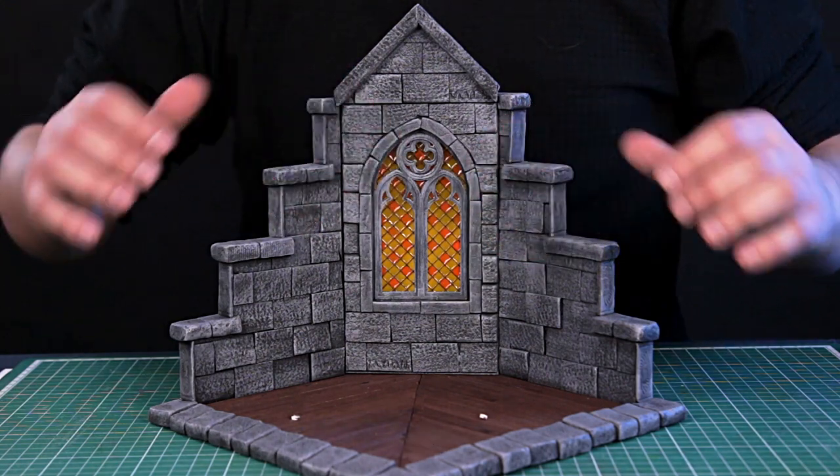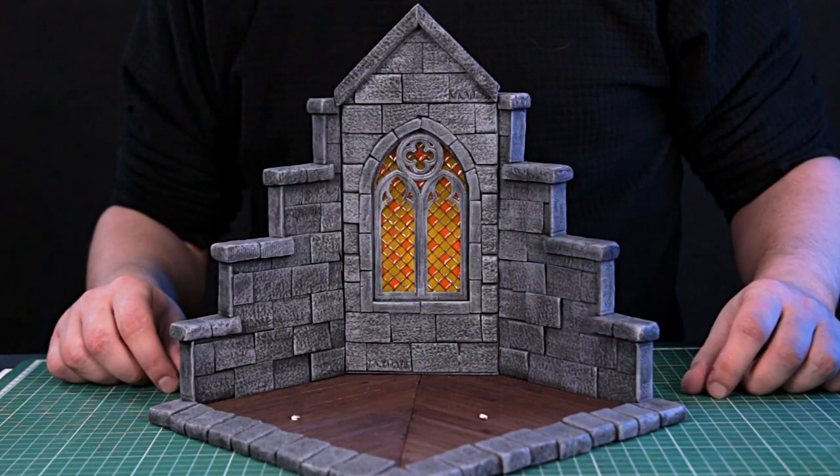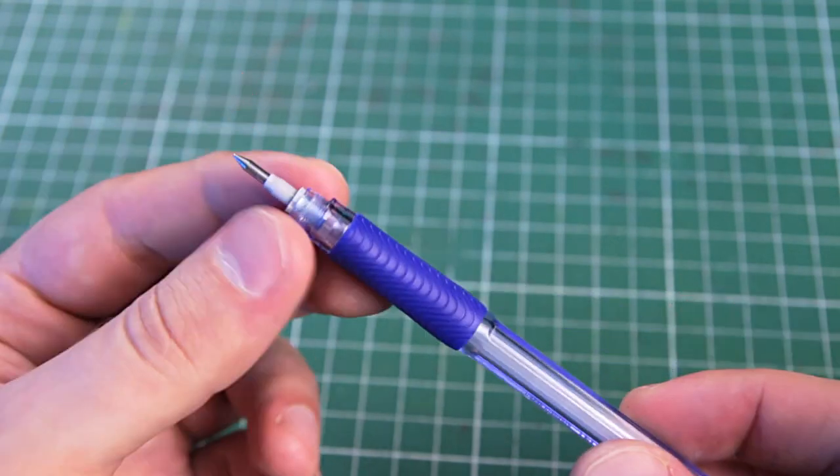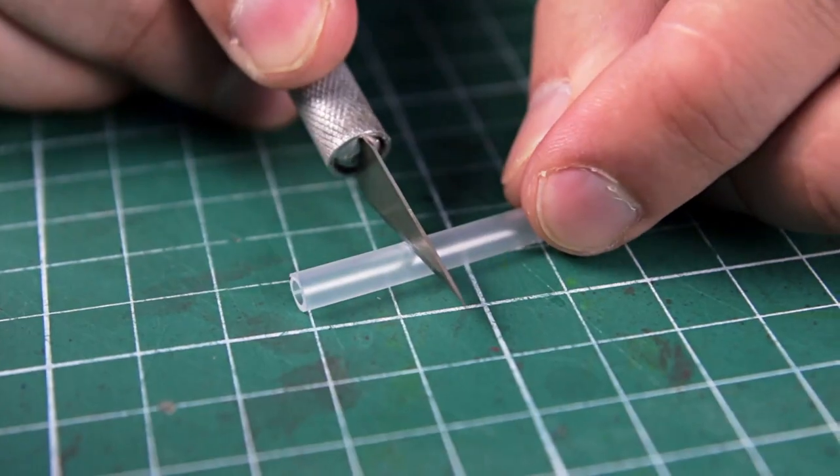It's time to fill this room with furniture and other small items. I'll start with this lantern which is on the floor. To make it I need a pen. Or rather a piece of the rod from the pen.